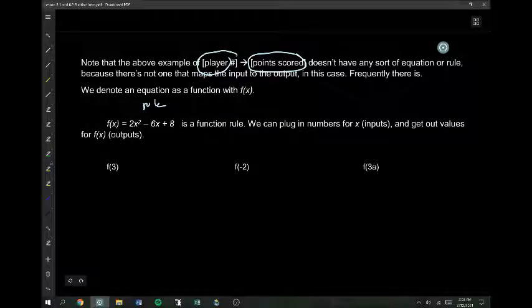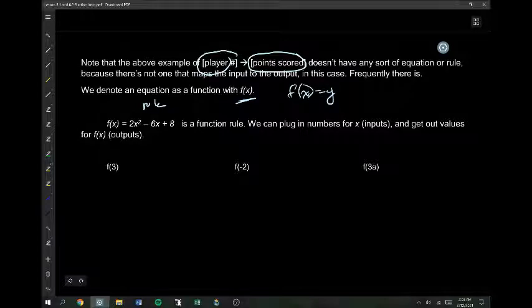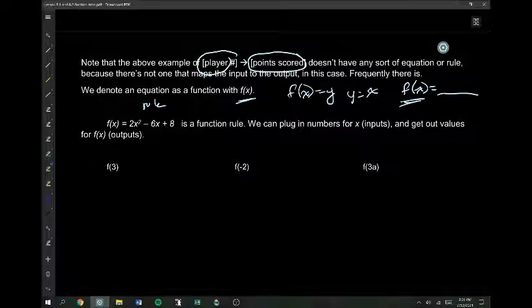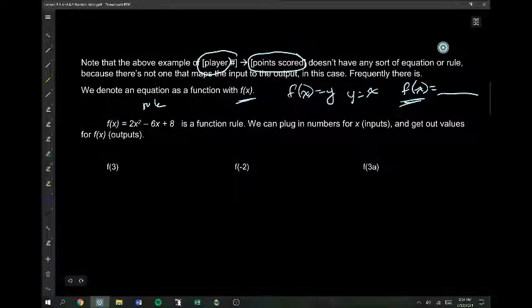And we denote that with this function notation, f of x. So, when you see f of x, that just means y. Usually we do functions with y equals something. But so that everybody can know what we're dealing with as a function, we replace the y with f of x. f of x just tells us that we have confidence. We have certainty. That we know if we plug one number in for x, we're only going to get out one possible number for y. So, whenever you see f of x, just think of this as y.